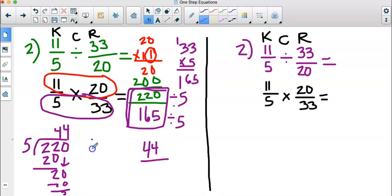And then 165 divided by 5. Alright, so 5 goes into 16 3 times. 3 times 5 is 15. Bring down the 5. 5 goes into 15 3 times.